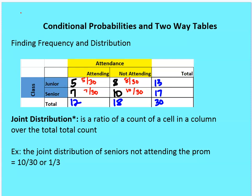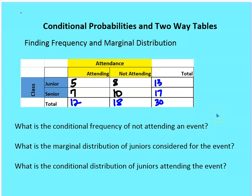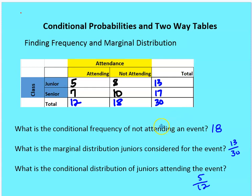Let's work through examples. The conditional frequency of not attending the event: 18 people did not attend out of the total considered. The marginal distribution of juniors considered for the event is 13 over 30, including both attending and not attending. The conditional distribution of juniors attending the event: juniors attending is 5 out of 12 total attending — so given that someone attended, the probability that person is a junior is 5 over 12.